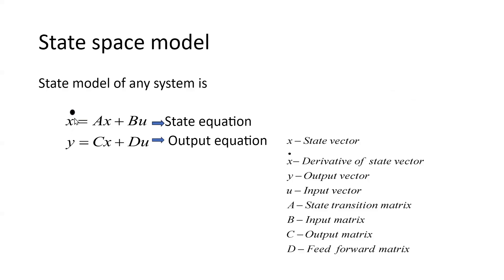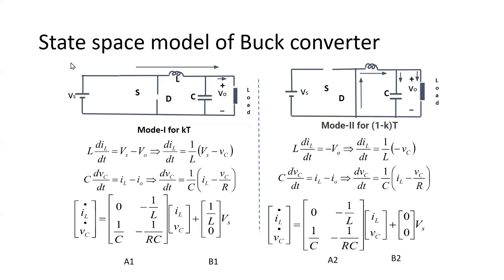Here x-dot is the derivative of the state vector, x is the state vector, y is the output vector, u is the input vector, A is the state transition matrix, B is the input matrix, C is the output matrix, and D is the feed-forward matrix. Now we are going to see how to derive the state space model of the buck converter.